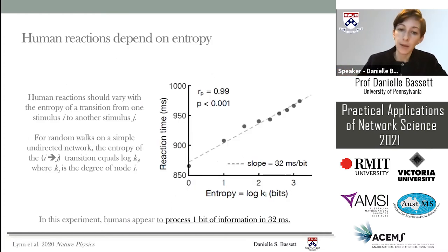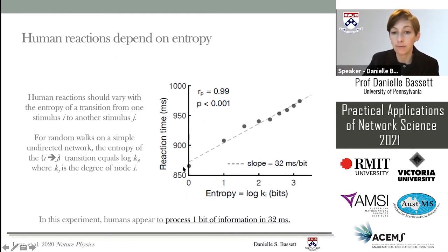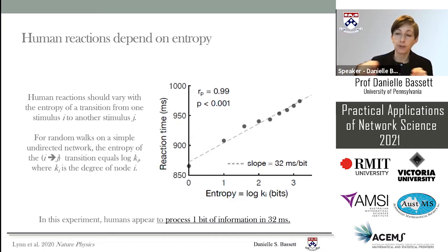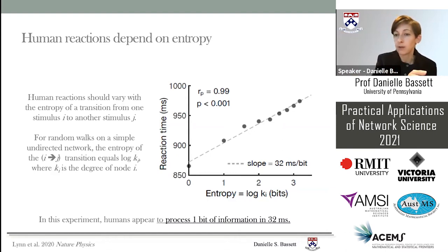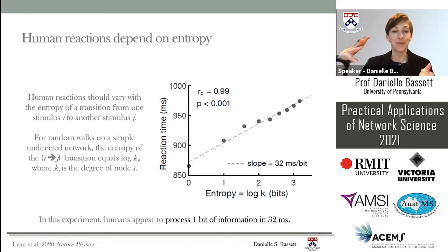Along the y-axis is human reaction time; along the x-axis is local entropy. When an event has only one possible outcome — entropy of zero — reaction time is very fast, almost 850 milliseconds. When participants are in a part of the environment with 14 different outcomes, they respond closer to 1000 milliseconds. There's a parametric relationship between reaction times and local entropy, defined simply by the degree of the node. Fitting a line to these data points shows humans process one bit of information every 32 milliseconds inside this task.